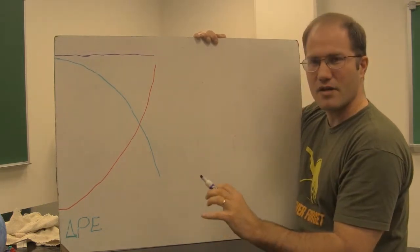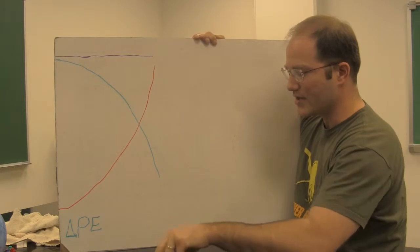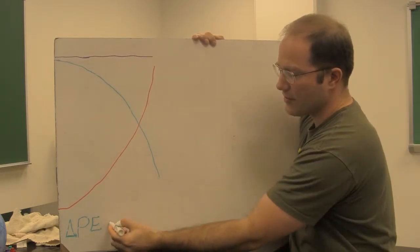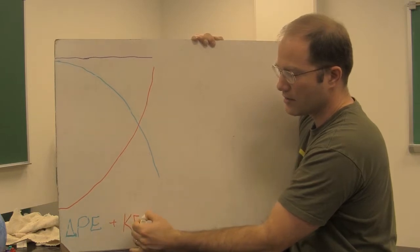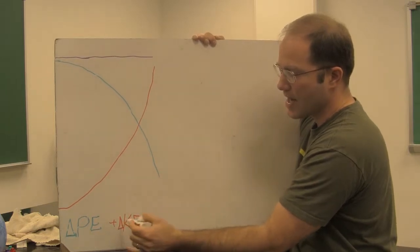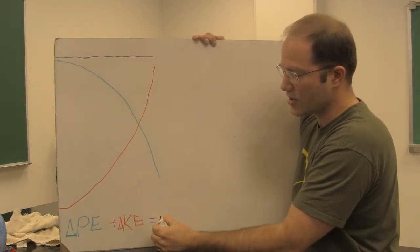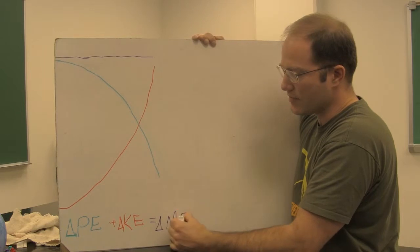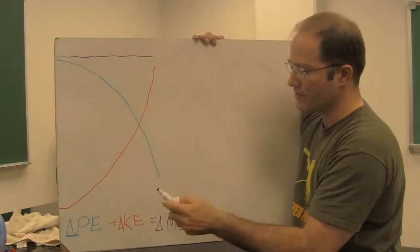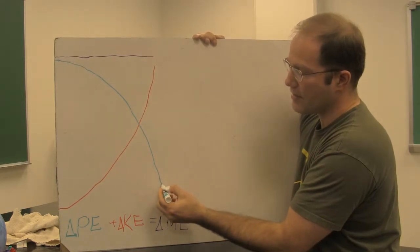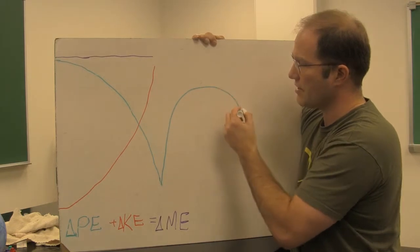Something interesting happens when the ball hits the ground. As the ball hits the ground, we have a change in potential energy plus a change in kinetic energy — delta KE — and that equals the change in mechanical energy, delta ME. Now as the ball hits the ground, it's going to come to a stop, bounce, and go through some bounce that looks sort of like this.